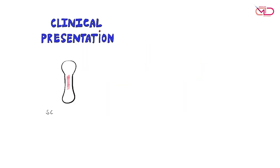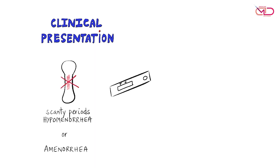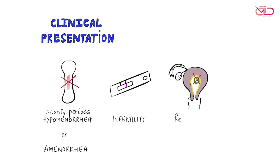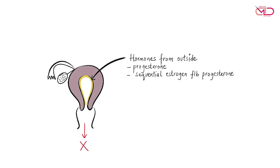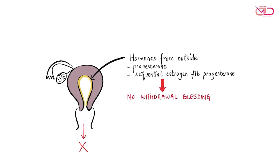Women can present with scanty periods — that is hypomenorrhea — or amenorrhea. She may also present with infertility or recurrent pregnancy loss. In those women who present with amenorrhea, if we give them hormones from outside, like progesterone or sequential estrogen followed by progesterone, even this will not be able to stimulate the endometrial lining and there will be no withdrawal bleeding.